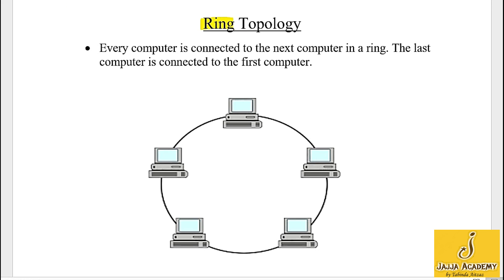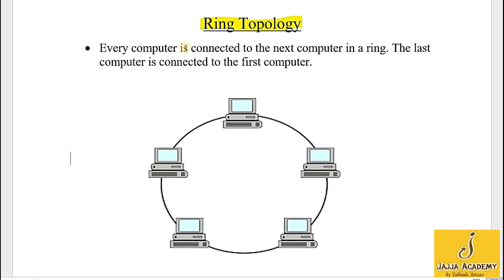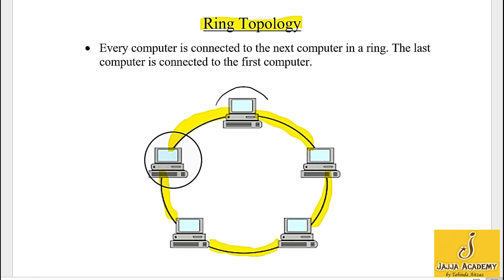Now let's move to the ring topology. As the name suggests, all devices or nodes in the ring topology are arranged in a ring shape. Every computer is connected to the next computer — this computer is connected to this computer — until the last computer is connected to the first computer. In this diagram, the last computer is attached to the first computer, hence making a ring shape.